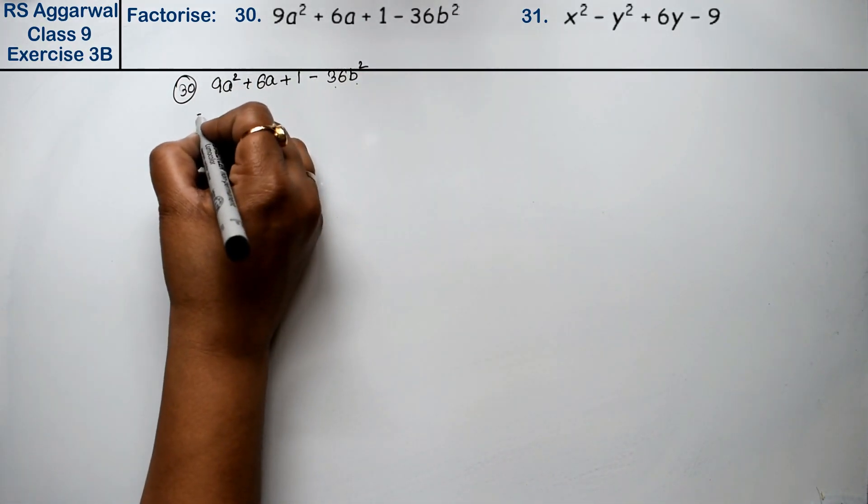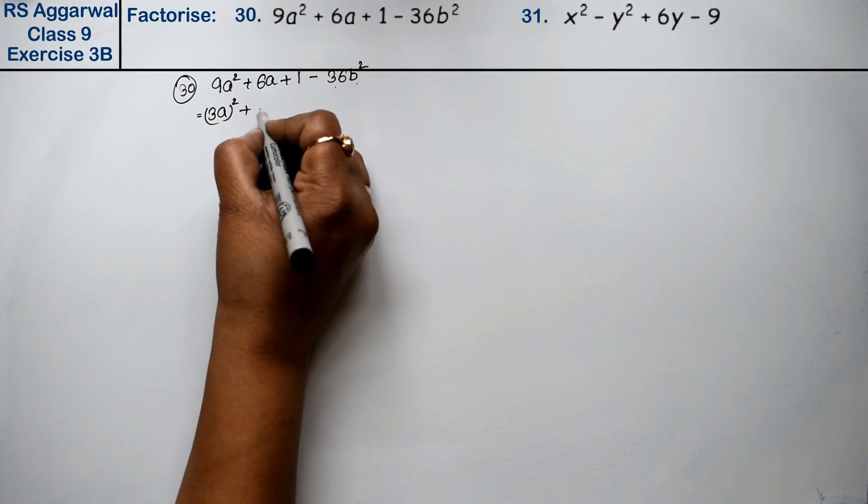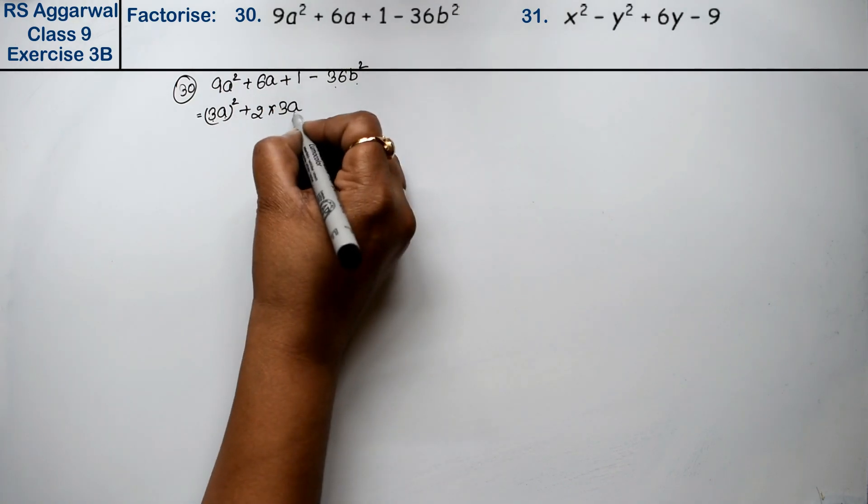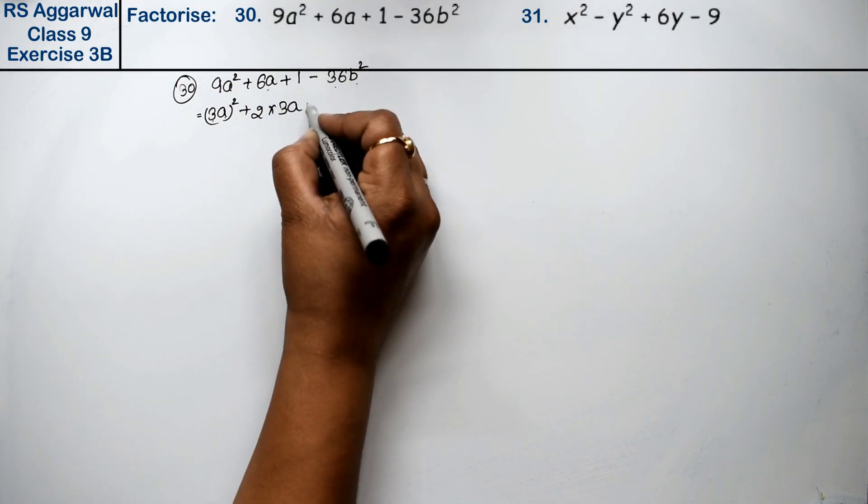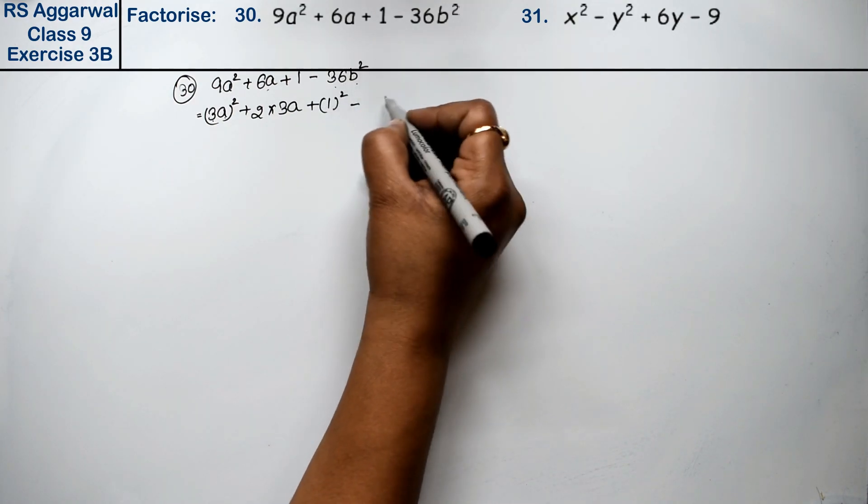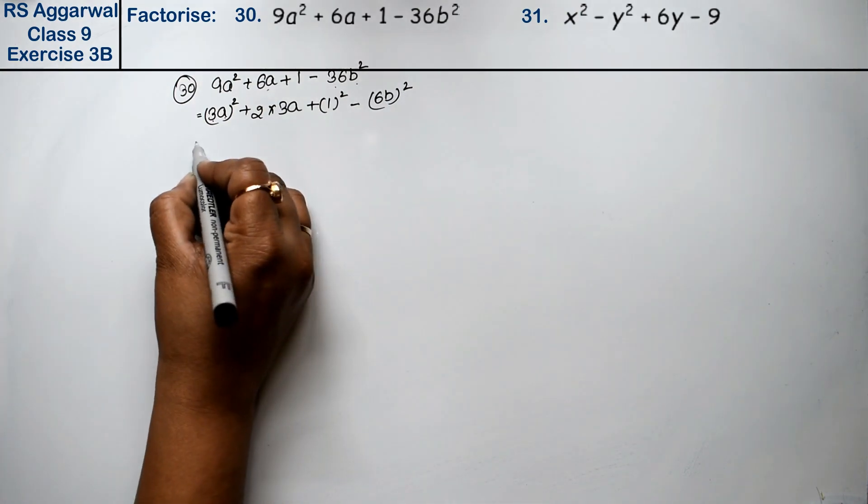We can see that 9a² is (3a)². We know that 2 × 3a × 1, so it becomes 3a here, and we have +1². So it becomes +1² - 36, which is 6², so it becomes (6b)².